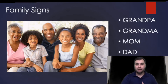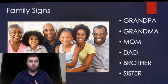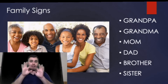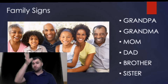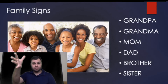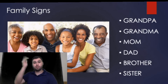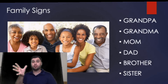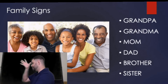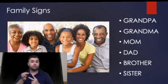Now we're moving on to the actual family signs. Let me move my video over so you can see more clearly. We have a picture of a family here. Starting with grandpa — you make the five handshape and bounce it off your forehead, you can do it two or three times: grandpa. Grandma is the same but down on the chin. Remember, male signs are up here and female signs are down here. So grandpa, grandma — let me show you what it looks like from the side: grandpa, grandma.